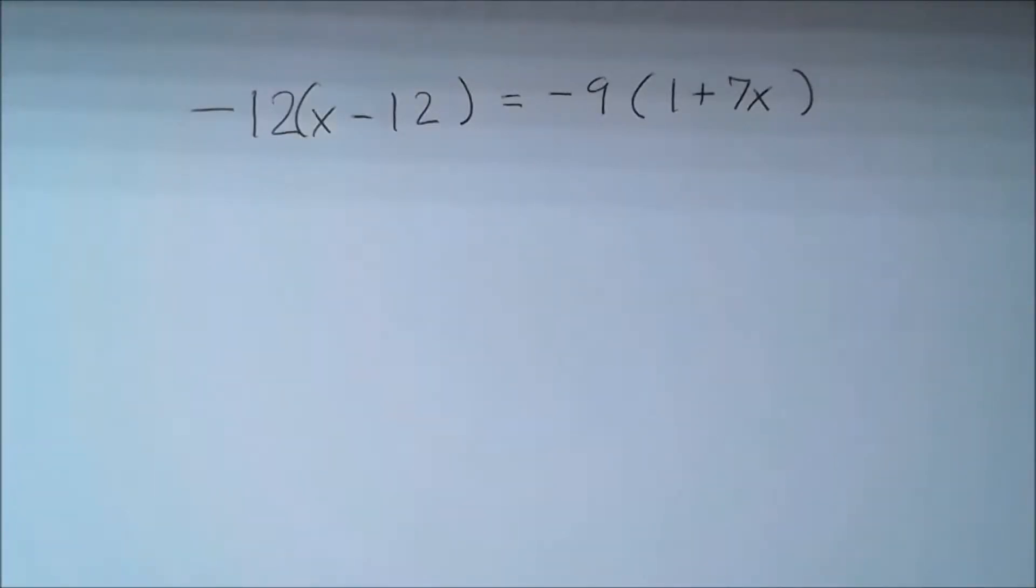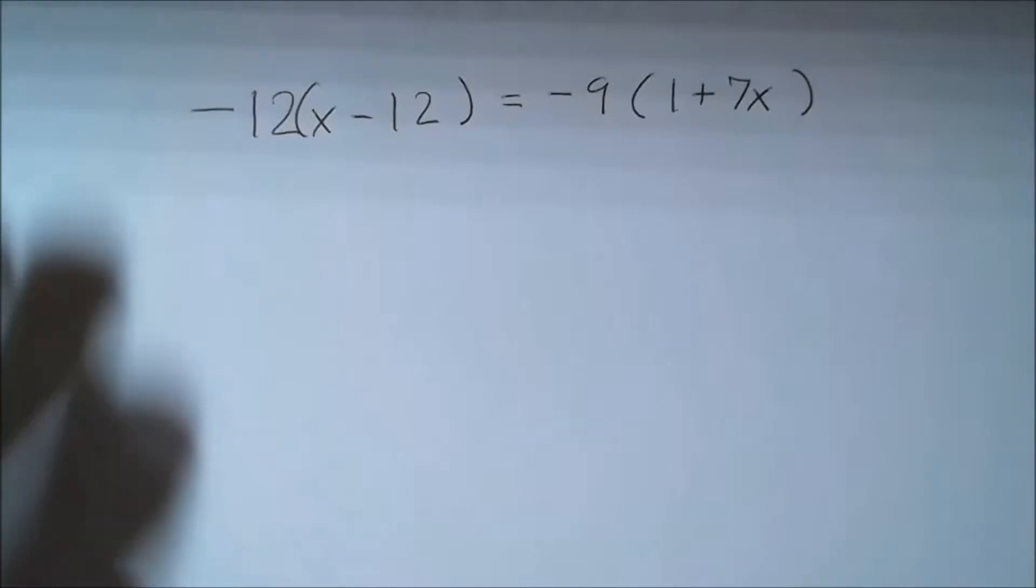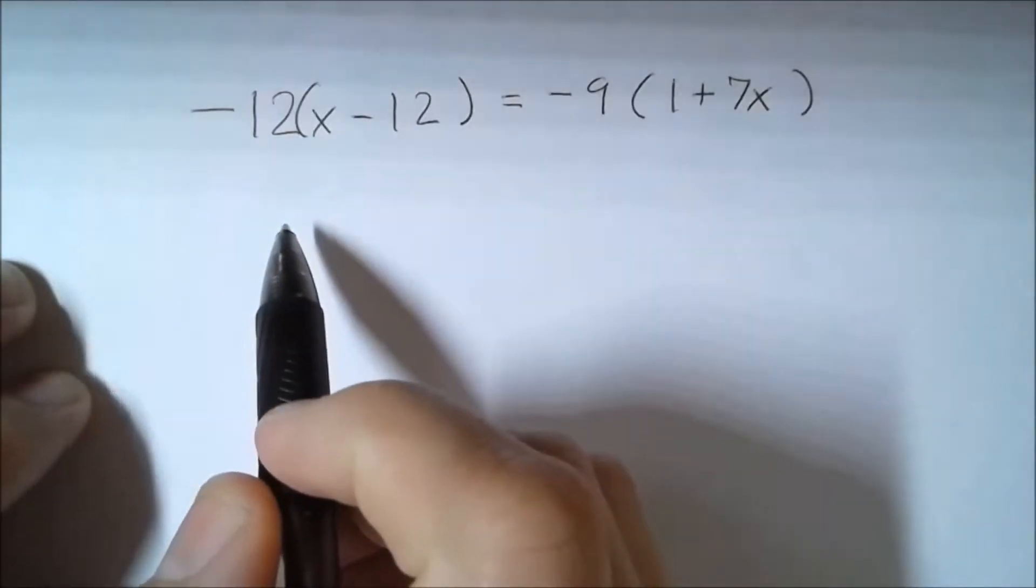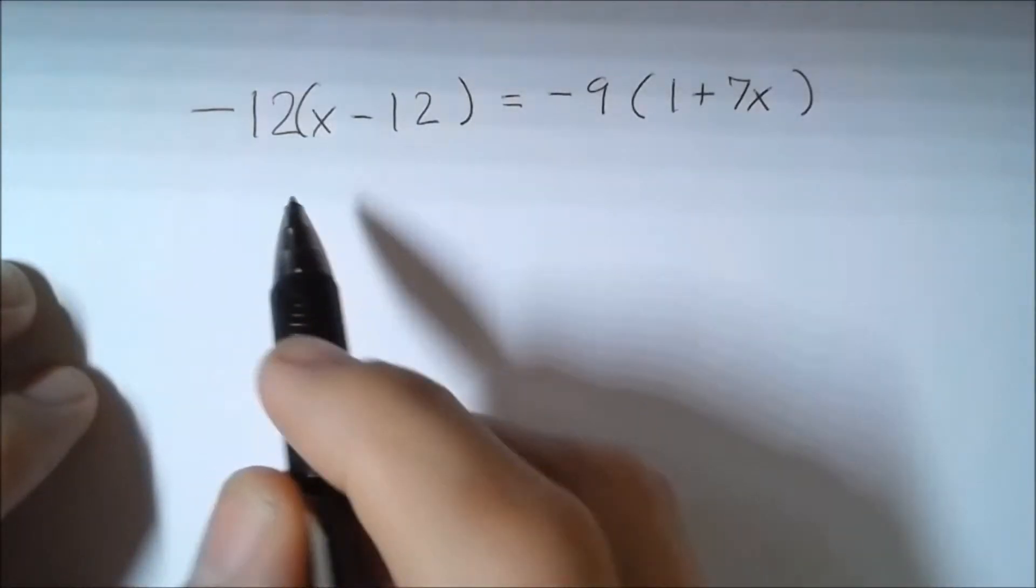In this video we're going to solve this equation, a multi-step equation with variables on both sides. This is a linear equation. Let's start by looking at what we need to do first. The first thing we need to do is distribute.